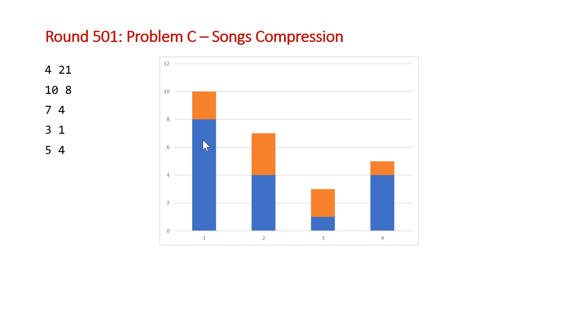The way we're going to solve this problem is by taking a look at the differences and optimally compressing the songs when we need to. The first thing we're going to do is create a vector of the differences between our total song sizes and our compressed song sizes, and we're going to sort this from greatest to smallest.